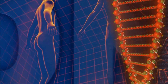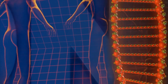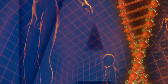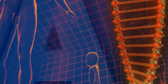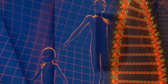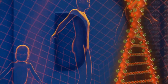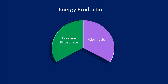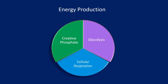Energy is needed to fuel the body's physiological functions, including growth, repair, and physical activity. The energy is produced via different metabolic pathways that include creatine phosphate and glycolysis metabolism, which are anaerobic as they do not require oxygen, and cellular respiration, which is aerobic as it requires oxygen.